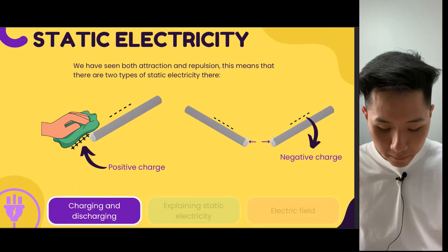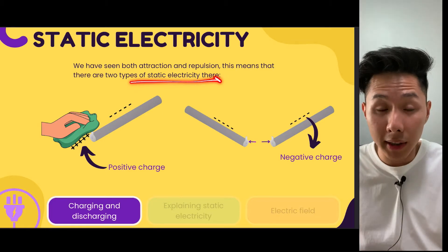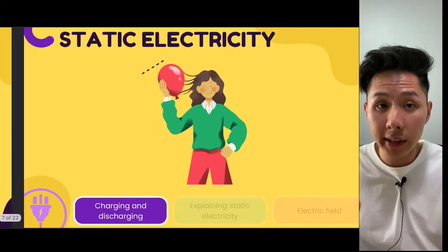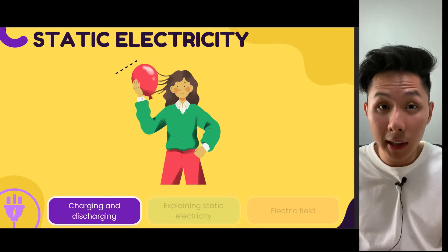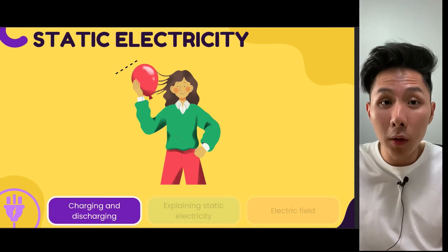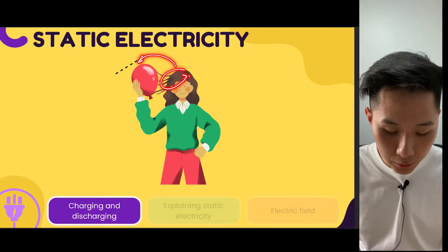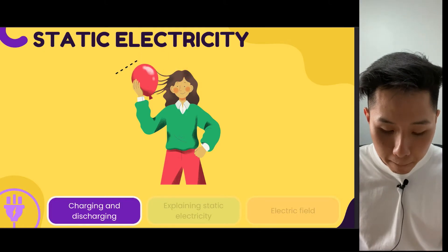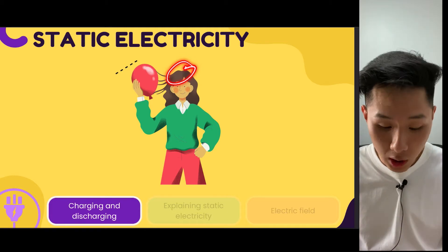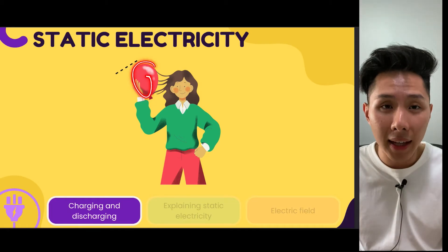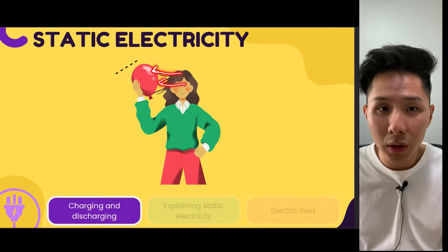What is happening here is that we say there is static electricity — an imbalance of charges in an object. Another way you can demonstrate static electricity is to rub your hair with a balloon, because the electrons from your hair are going to move from your hair to the balloon. And because your hair has lost electrons, it is positively charged. And for the balloon, it has gained electrons, therefore it is negatively charged.